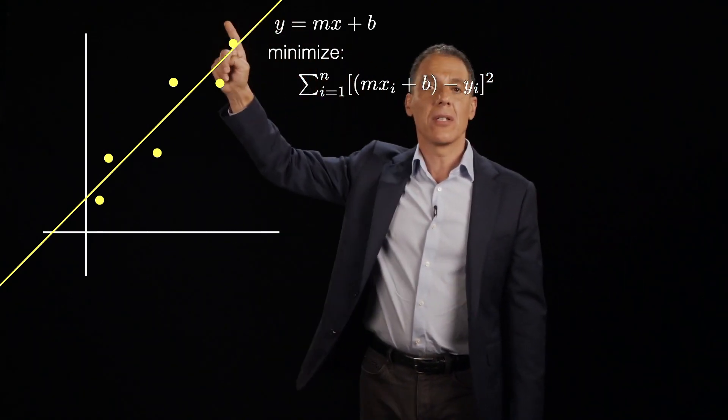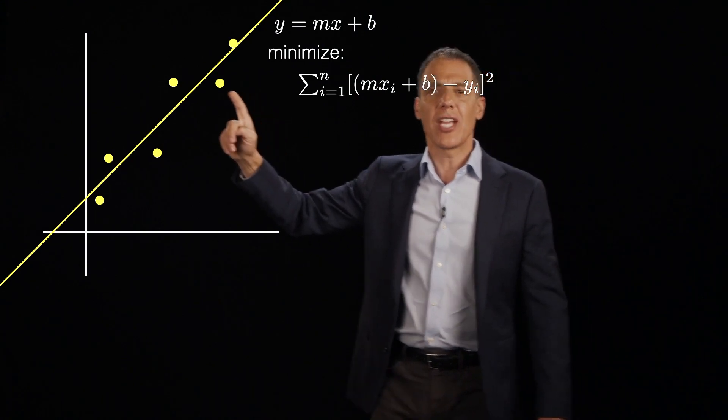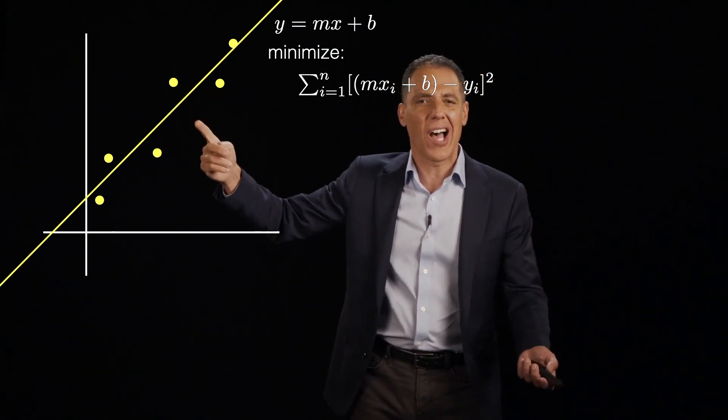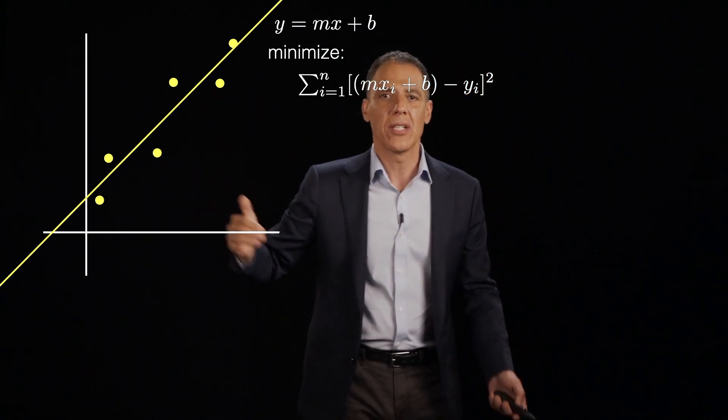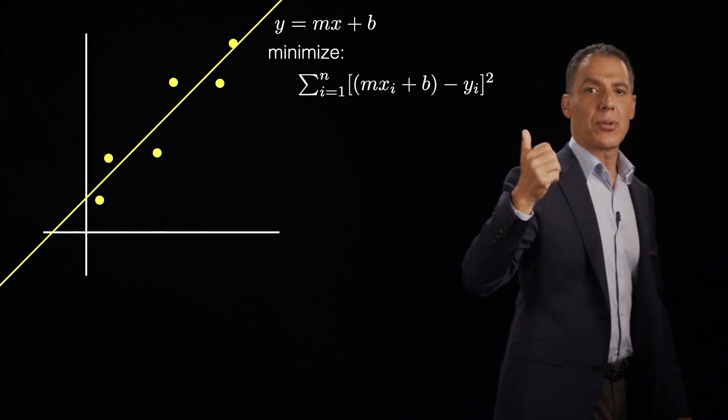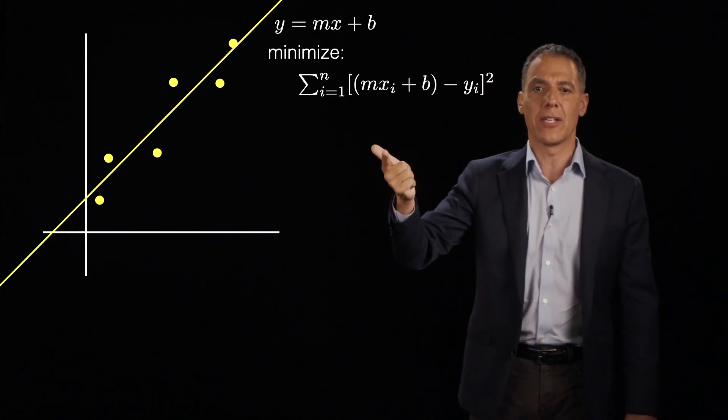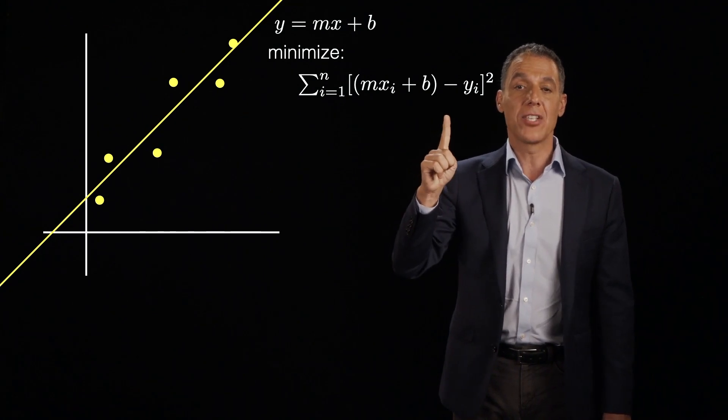Given a model, a line for now, mx plus b, given a bunch of data points that sort of fit a line but don't quite, we are going to try to find the parameters m and b, the slope and the intercept, that minimize this objective.